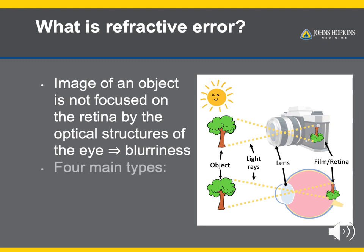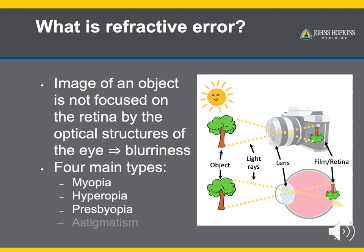There are four main types of refractive error: myopia, hyperopia, presbyopia, and astigmatism. We will go over each of these in detail in the subsequent slides.